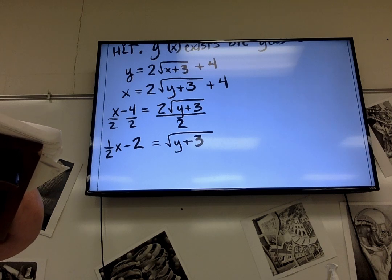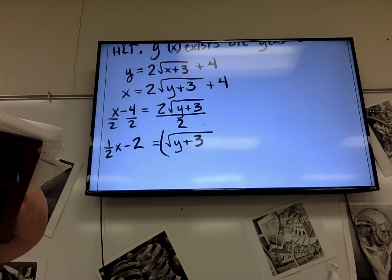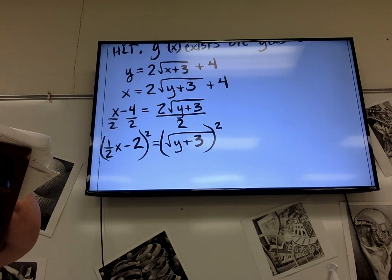Now what? Yeah, I've got to get rid of the square root. So my final answer should not have a square root in it. I need to get rid of the square root by squaring both sides. Now this is not the only way to do it, but all the answers will be equivalent. So I get (1/2 x minus 2) squared equals y plus 3.